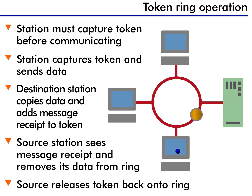The data continues around the ring back to the source, and it's the sending station's responsibility to remove its data from the ring. As it's removing its data, it also checks to see if the message was acknowledged. Finally, the station releases the token back onto the ring so someone else can use it.